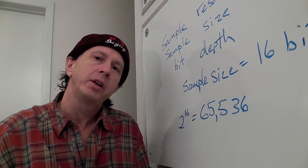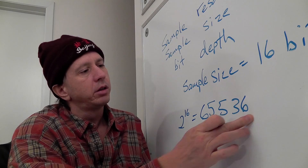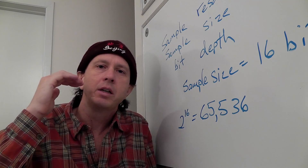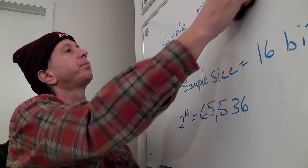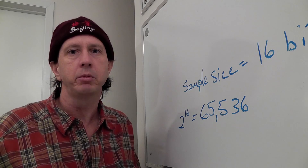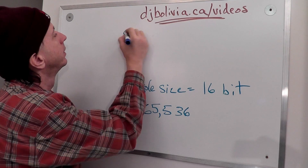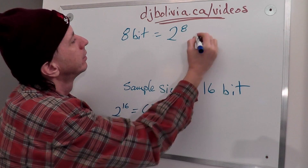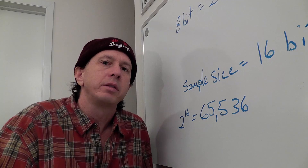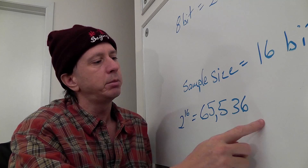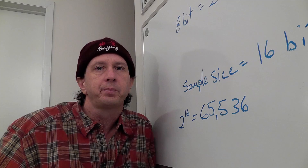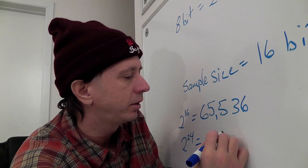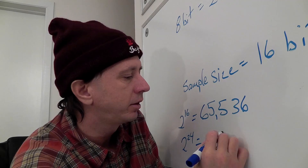So with a 16-bit sample size, you can have 65,000 different numbers represented. With an 8-bit sample size — which all video games used in the 80s — you have 2⁸ = 256 different options. And 24-bit sampling, which is starting to become common, gives you 2²⁴ = 16,777,216 different choices.